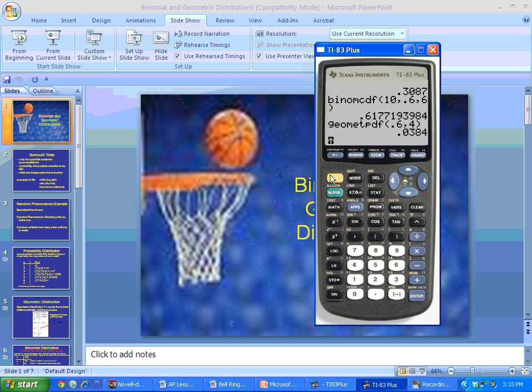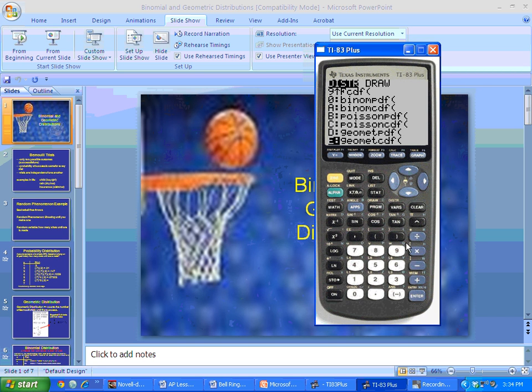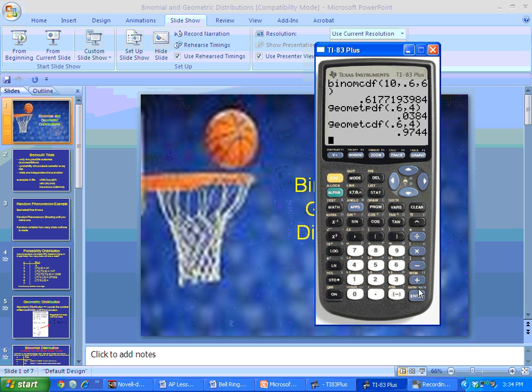And finally, let's do the same two numbers, but with Geomet CDF. We're a 60% shooter. And we're going to put a four in here. And let's see the big difference. Wow, we go from 3.8% to 97.4%. And the reason being is, remember, CDF is the probability that we will make our first shot within our first four shots. So it's going to take us up to four tries to make our first shot. Again, we're most likely going to make our first shot within our first four. That's why there's a high probability.